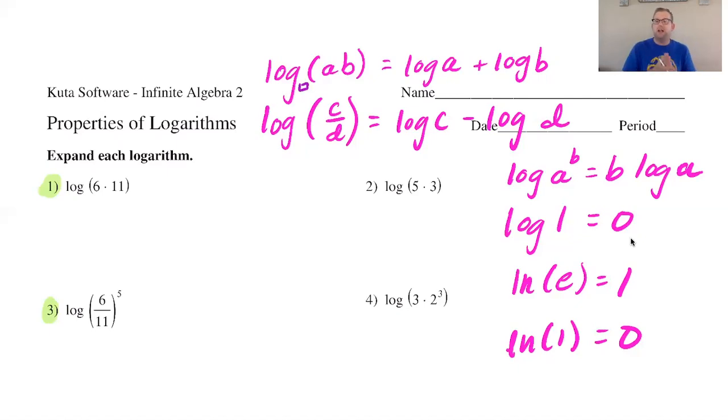What I have after that is representing the power property of logs which basically says if your argument in this case is represented by the letter A and it's raised to the power of B, well we can just throw that B right down in front and it becomes B times log A.